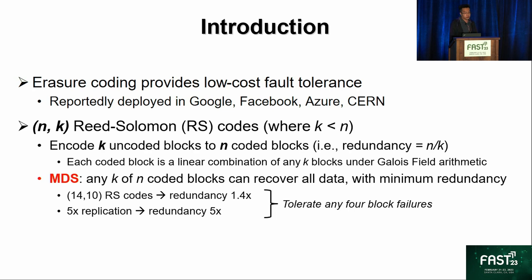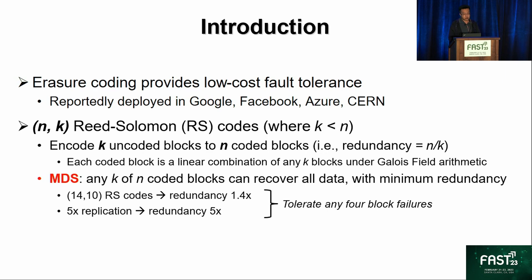Each coded block can be expressed as a linear combination of any k blocks under Galois field arithmetic. A nice property of Reed-Solomon coding is the MDS property, which means any k of n coded blocks can recover all original data while the redundancy overhead n over k is the minimum. For example, we can construct a 14-10 RS code deployed at Facebook that tolerates any four block failures with only 1.4x redundancy overhead, whereas replication requires five copies — five times the redundancy — to tolerate any four block failures.